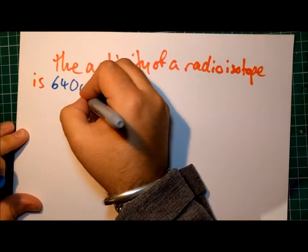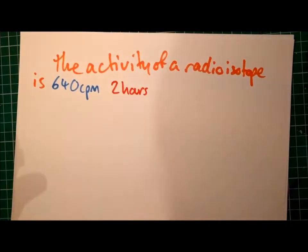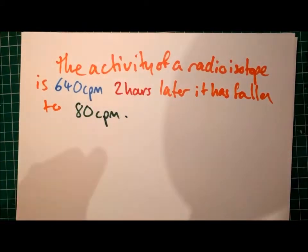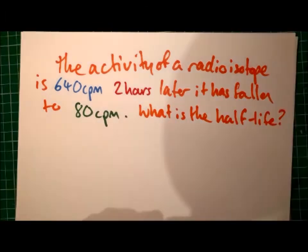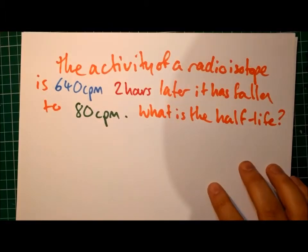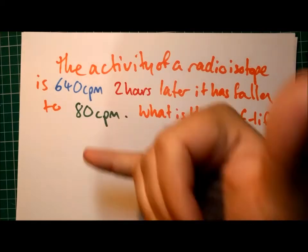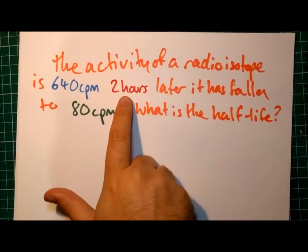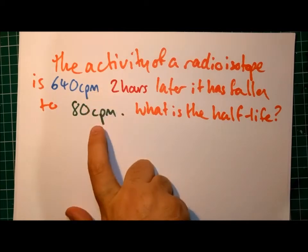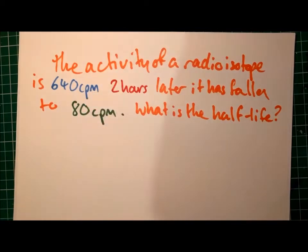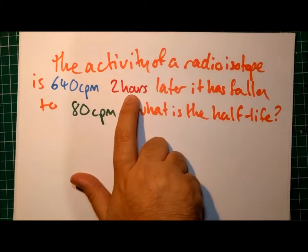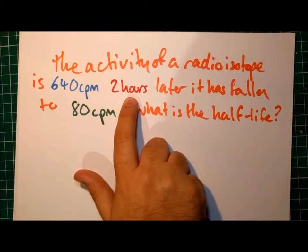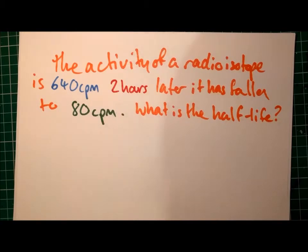So what we're going to do now is work through a couple of example questions that you're likely to encounter at GCSE. The way to answer this sort of question is to work out how many half-lives must have occurred in those two hours as the count rate dropped from 640 to 80. Once you know how many half-lives have gone on, you can simply divide the amount of time it took by the number of half-lives and that will give you the length of one half-life.